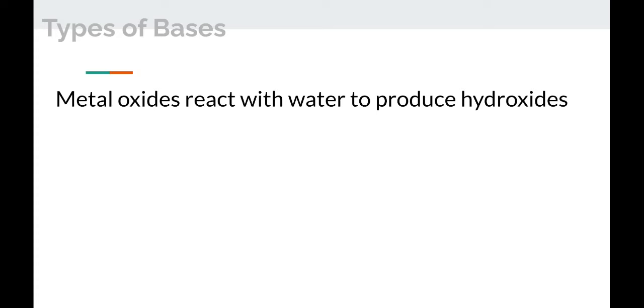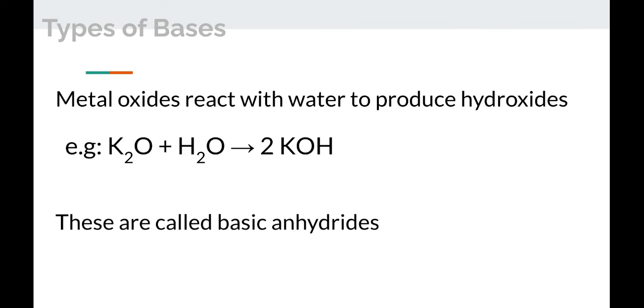Another type of base is a metal oxide that reacts with water to produce hydroxides. Nonmetal oxides react with water to produce acids, they're acidic anhydrides. But metal oxides react with water and they produce these hydroxides. For example, if you put K2O potassium oxide in water, it'll make KOH. KOH dissociates to give you hydroxide ion, and hydroxide ion functions as a proton acceptor. So these things are called basic anhydrides because they're bases that just lack water.